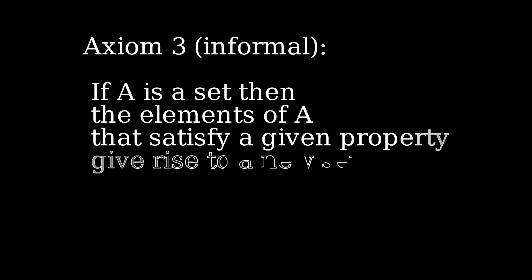Mathematicians thought for a while on how to solve Russell's Paradox and came to the conclusion that the set R is not actually a set. You cannot simply throw things into a container and expect to build a set that way — not everything is a set. So how do we know when something is a set and when something is not? If A is a set, the elements of A that satisfy a given property do actually give rise to a new set — a subset of A. This is what you can do: if you have a set, you can select the elements that satisfy a given property.